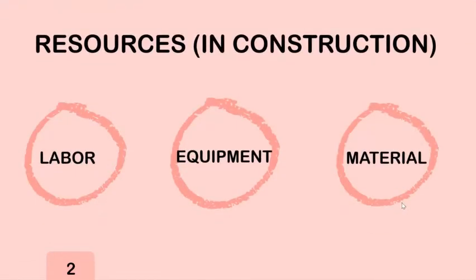Resources in construction indicate three main categories: labor, usually paid in salary or hourly; equipment, which is used for the construction process but not permanently installed in the project; and lastly, material, which stays permanently in the project after completion.